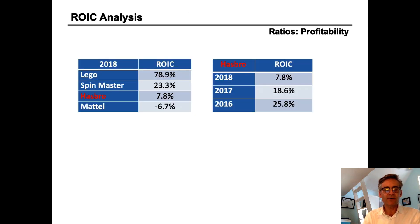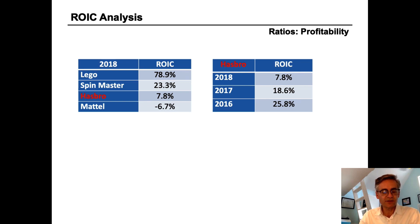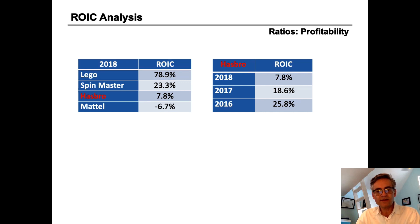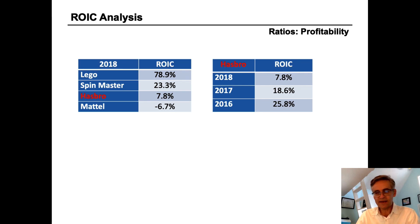How do we evaluate that 7.8%? One thing we do is compare Hasbro's return on invested capital to other companies in its industry. Looking at LEGO, SpinMaster, and Mattel as other large toy companies, we see that Hasbro's ROIC is significantly lower than some peers, though still positive while Mattel has a negative return on capital. In terms of trend, Hasbro's ROIC has been deteriorating — in 2016 it was almost 26%, which was quite respectable, but it has declined significantly since then. We like to see higher and positive returns on invested capital.